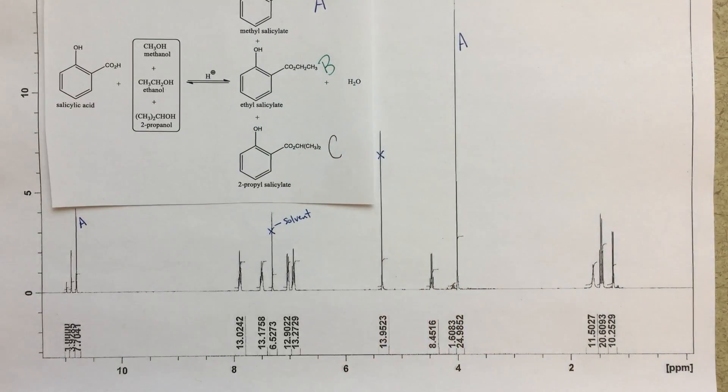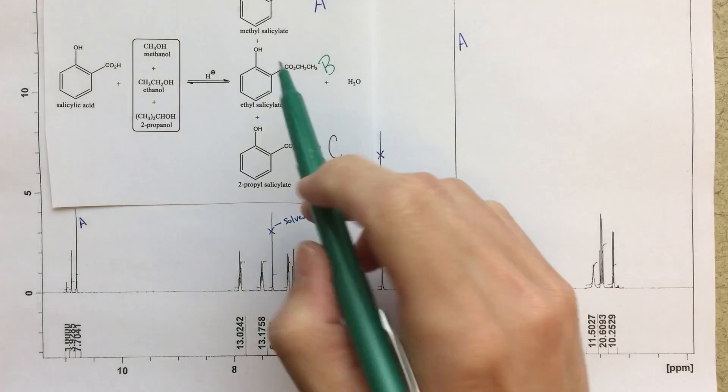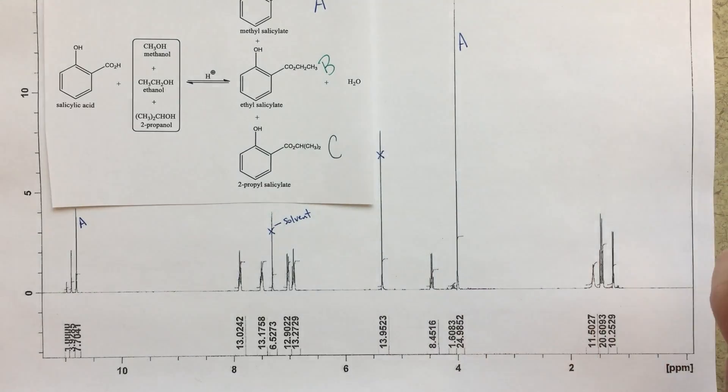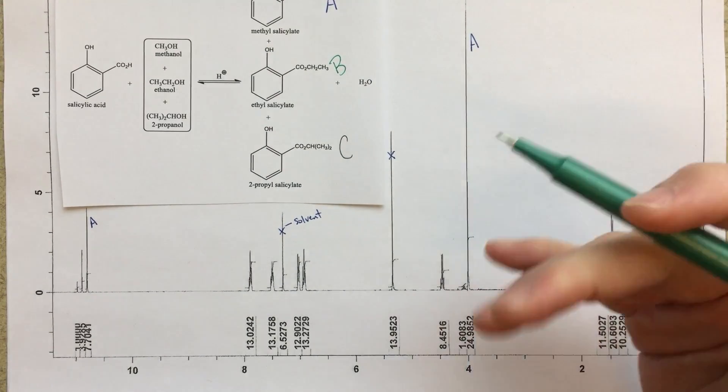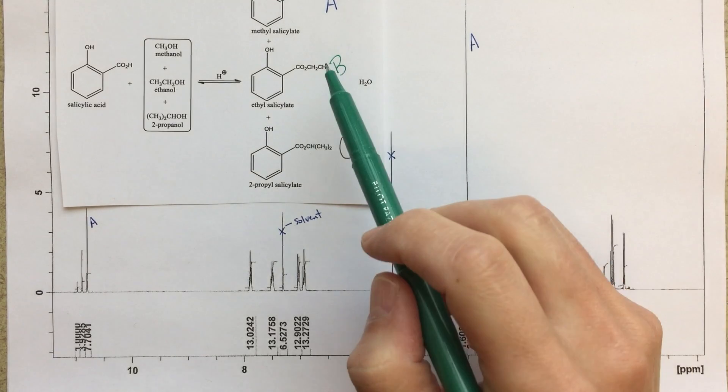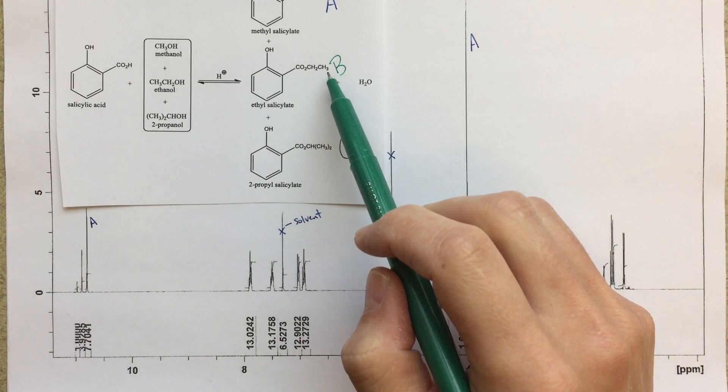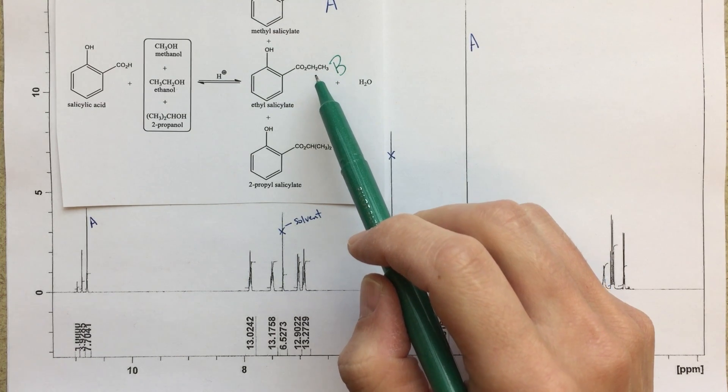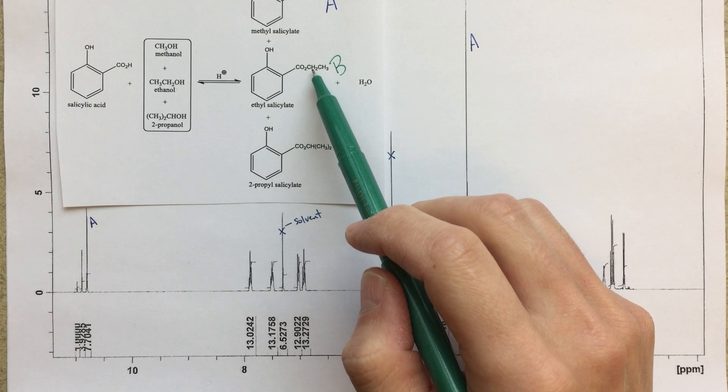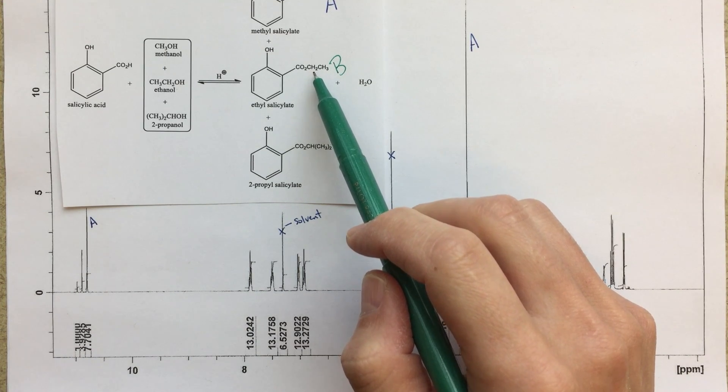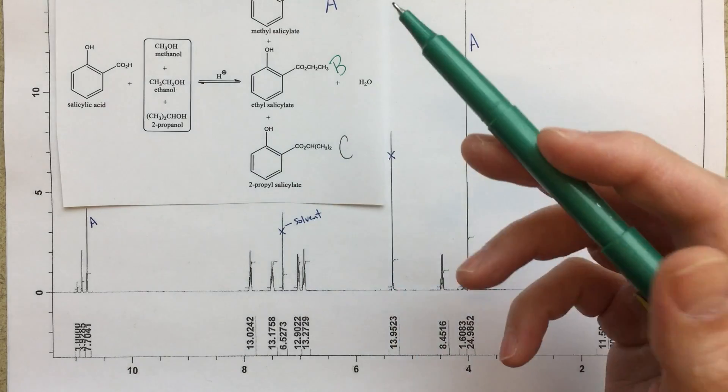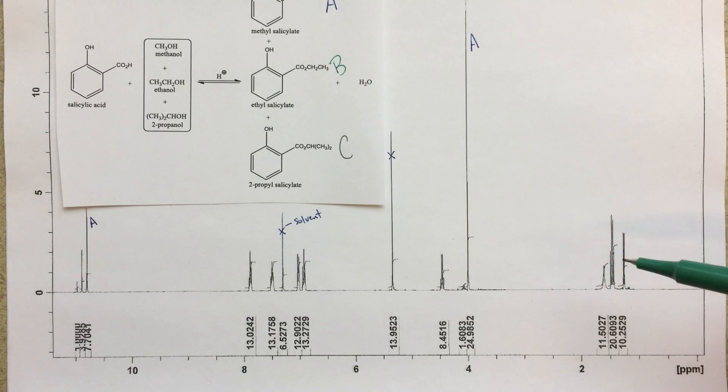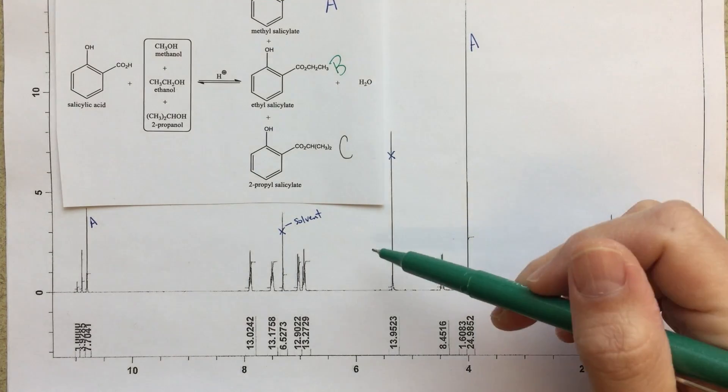So let's move to B then. So for B, I should have an ethyl group, so CH2-CH3. And if you remember in some previous videos, we talked about ethyl groups and how we have a very common motif for ethyl groups. This methyl group at the end should integrate to a three-high triplet because it's being split by the CH2, the methylene linker. The CH2, it should split into a two-high quartet.